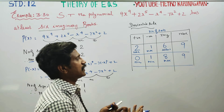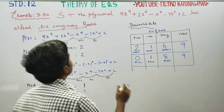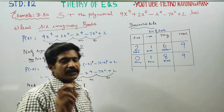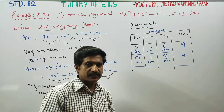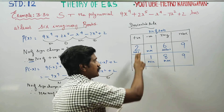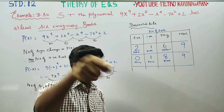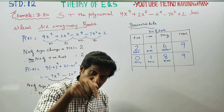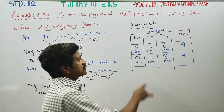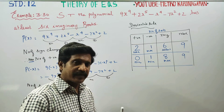At least the maximum number of positive roots can be 2, the minimum number of positive roots can be 0. The maximum number of negative roots is 1, and the minimum number of negative roots is 0.